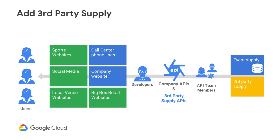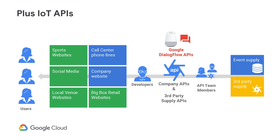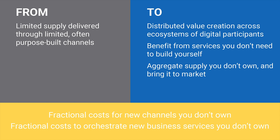Due to the high demand, the company found they could engage additional third-party supply to help meet demand. Demand continued to grow with IoT devices coming into the picture — consumers wanted to search for events and order tickets via voice-activated devices such as the Google Home Assistant. Thus, an API product ecosystem was born with demand and supply running through the API product ecosystem powered by the Google Apigee platform. The company grew from a limited supply delivered through a closed private channel to a vibrant marketplace with an ecosystem of API products, with third-party suppliers consumed by new marketing channels creating services the company didn't need to build. The added benefit was that these new services cost little to the company to provide.